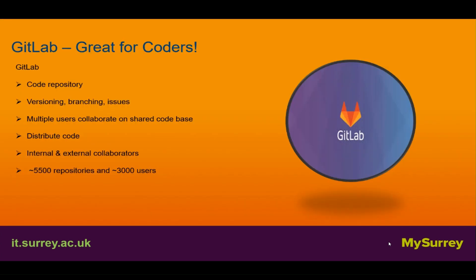GitLab is great for coders. It is a code repository where you can do versioning, branching and issue tracking. Multiple users can collaborate on a shared code base and distribute code, with internal and external collaborators supported. There are around 5,500 repositories and around 3,000 users.